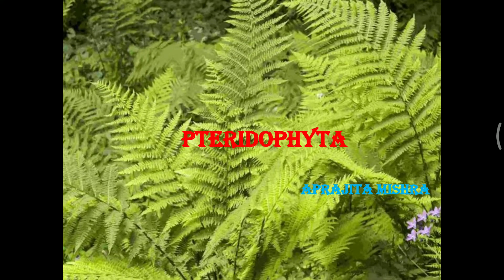Mosses and ferns are fundamentally terrestrial plants, but they are extremely dependent on water for completion of their life cycle. For example, an external source of water is required for the dehiscence of antheridia, because when water droplets fall on the antheridia, they open up and liberate the antherozoids. Once released, the antherozoids travel with water to reach the archegonia and enter its neck, where the egg is present inside.